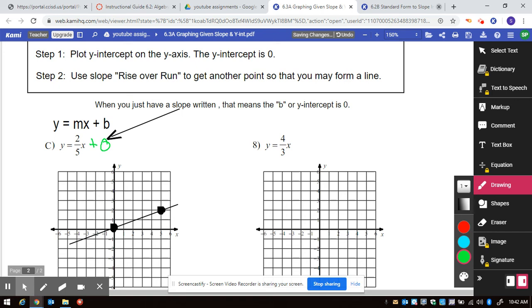Because if you have none, none is represented by zero. And so what this means is two over five x plus zero.